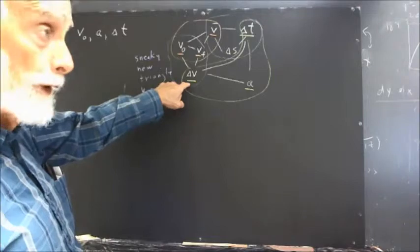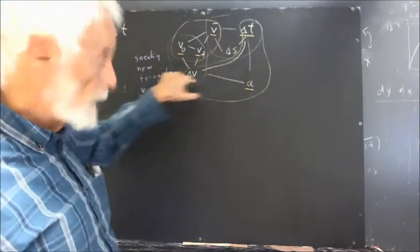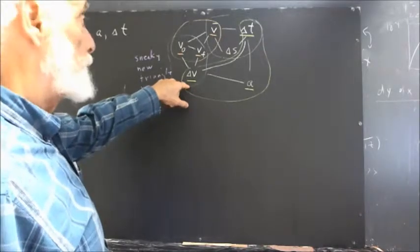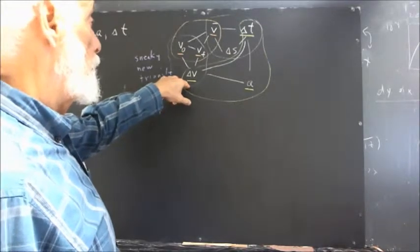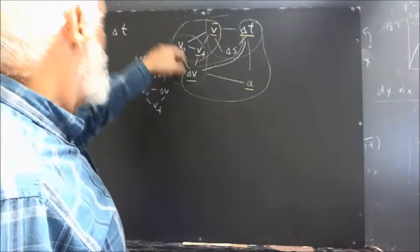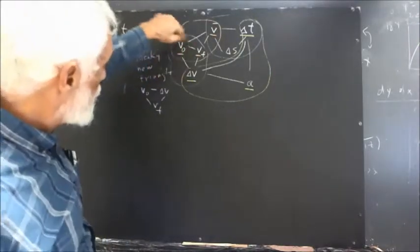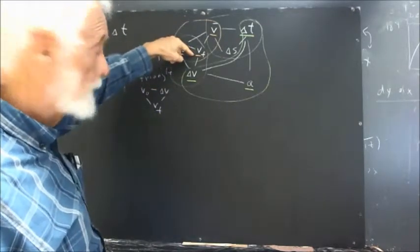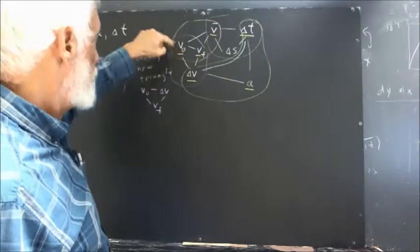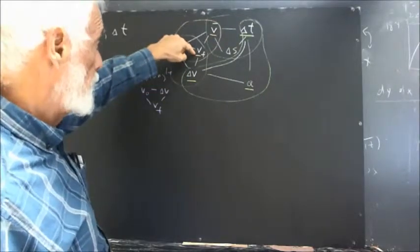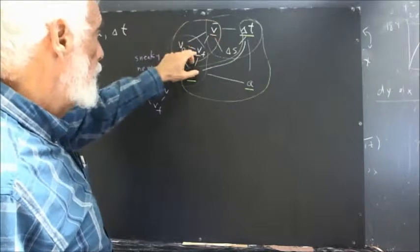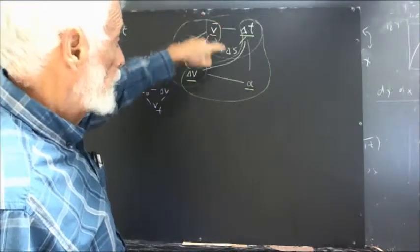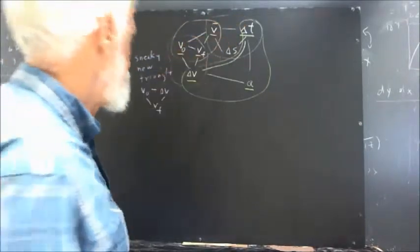We can then calculate delta V very easily: we multiply A by delta T to get delta V. Now that we know delta V, we use the delta V, V naught, VF triangle and simply add delta V to V naught to get VF. Then knowing V naught and VF, we find average velocity V bar, and the only thing we don't know is delta S.